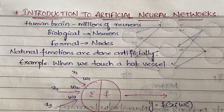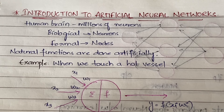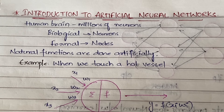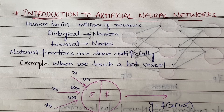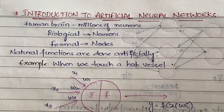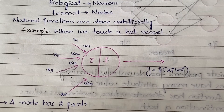For example, when you touch a hot vessel, your skin becomes red or you get bubbles — all the neurons related to your hand and skin get activated and send a signal to the brain that your skin has touched something very hot. The brain collects the input from all the neurons, processes it, and generates an output — which is to take back your hand. All this happens in a fraction of a second.